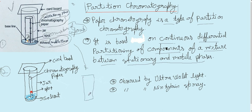Here is the initial spot, and after some time it fragments into a number of spots. These spots represent the different components of the mixture. After that, we remove the paper from the jar — this is called the chromatogram.